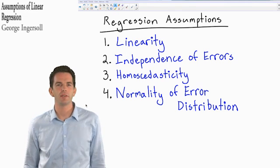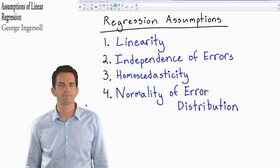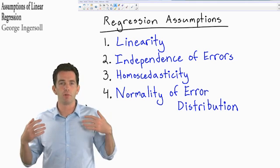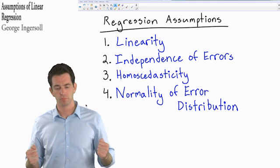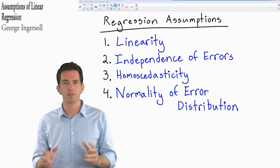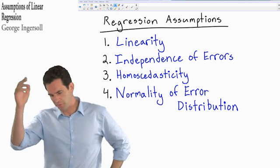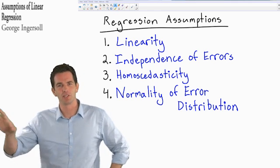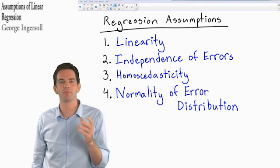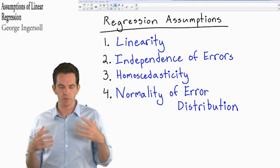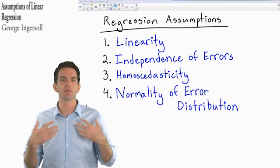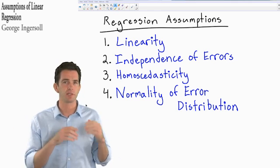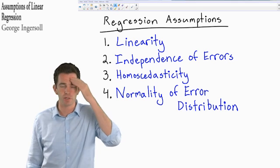In this video we're going to be talking about the assumptions of linear regression. These are the things that must hold true in order for a regression to be legitimate. We use the term assumptions not because we just assume these things are true any time we run a regression and forget them, but rather because when we see a regression output, we assume these things have been checked out, they all hold true, and therefore this is a legitimate regression and we can go ahead and interpret the results.